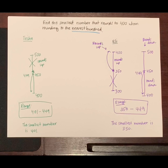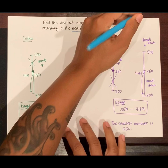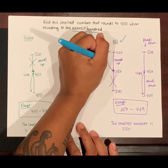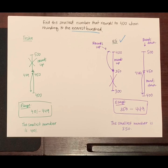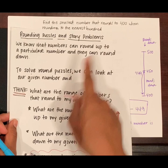That's right. I can't trick you. Eli's work is stronger because Eli showed two number lines. One that shows all the numbers that round up to 400 and another number line that shows all the numbers that round down to 400. Eli remembered that we have to ask ourselves, what are the range of numbers that round to my given number and that numbers can round up or down.